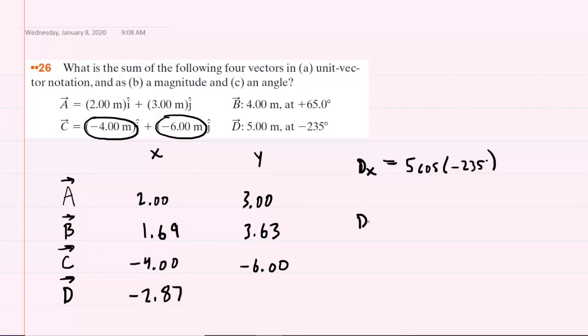And then for the Y component, we'll take the magnitude and multiply by the sine of the given angle. And we end up with 4.10, approximately.